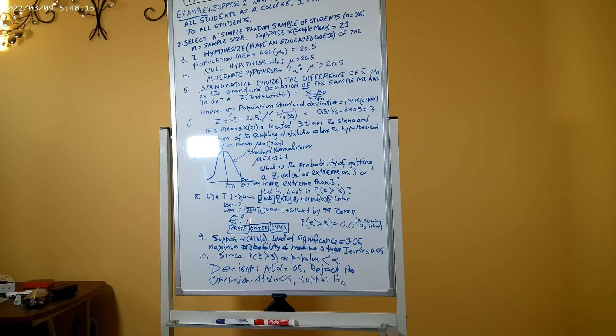We can do this by using a TI-84 calculator. So in the TI-84 calculator, we press the second key and then the VARS key, and then we scroll down to number 2, which is normalcdf, and then we will hit enter.